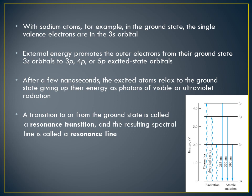When the electron returns from 5p, 4p, and 3p, we get three emission lines obtained at 285, 330, and 590 nanometers, which are characteristic of the sodium element. A transition to or from the ground state is called a resonance transition, and the resulting spectral line is called a resonance line.